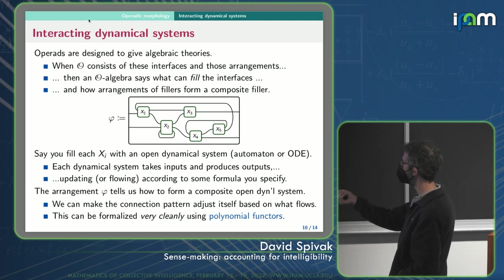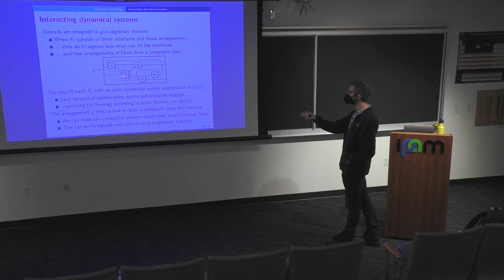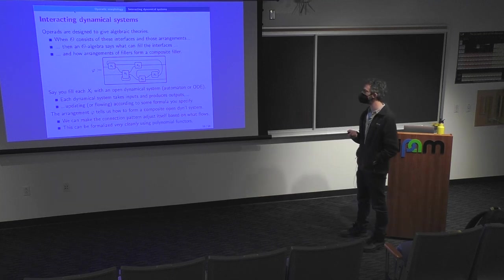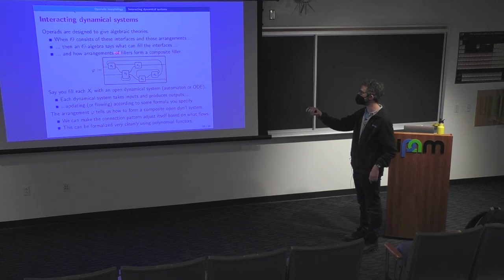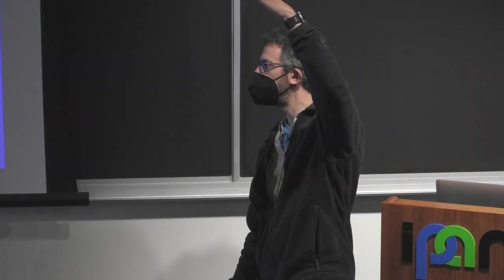And the arrangement tells us how we form this composite dynamical system from the pieces. It says, this variable that's missing in X2 is coming from X1. So it's f of X1 or something. And so we get the, the arrangement tells us how to put all that together to form one big ODE that the person looking at this outer box would see, they'd see this really big system of ODEs.